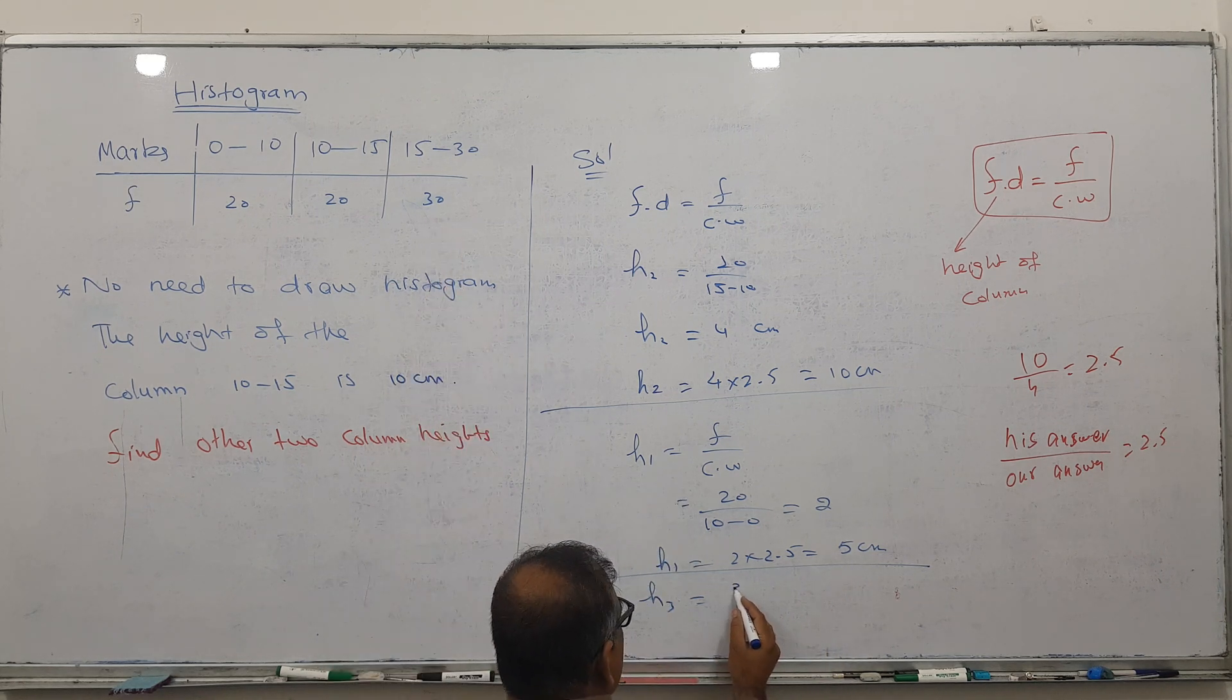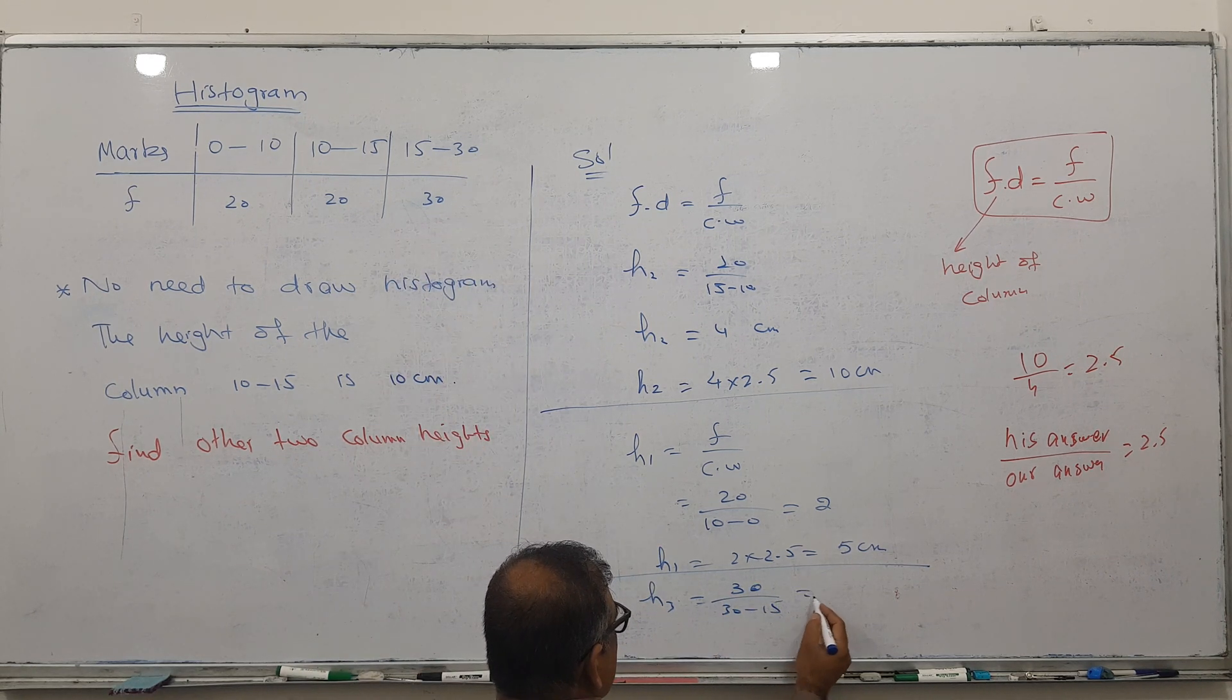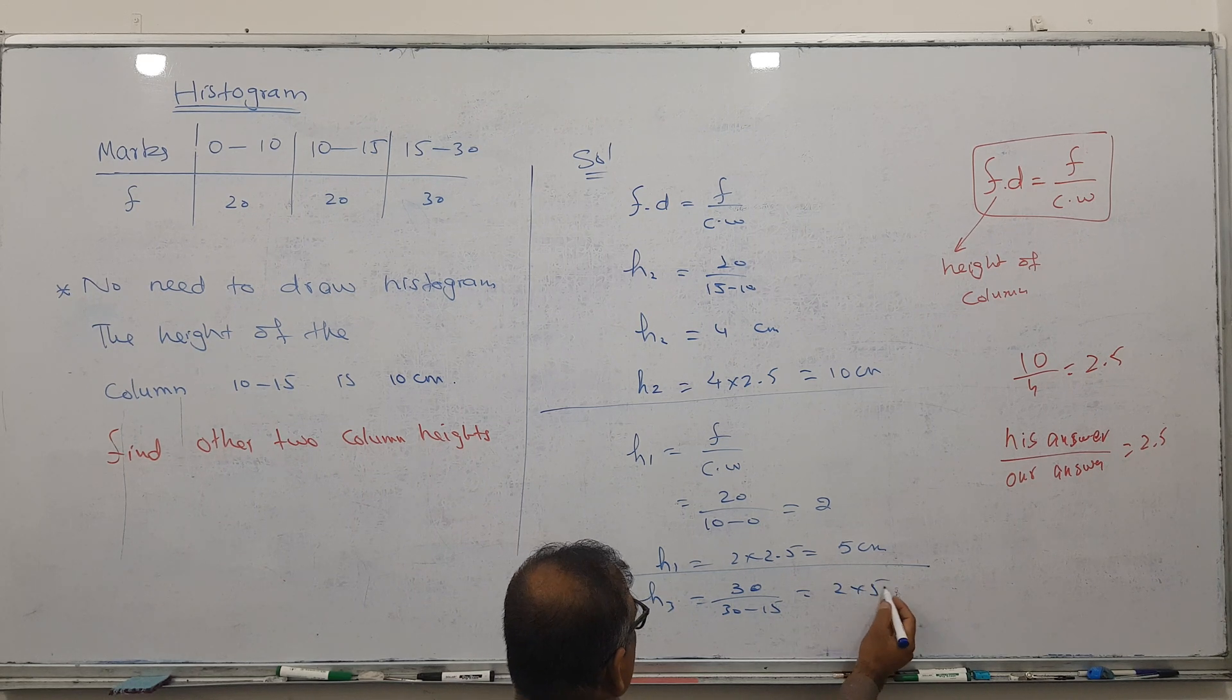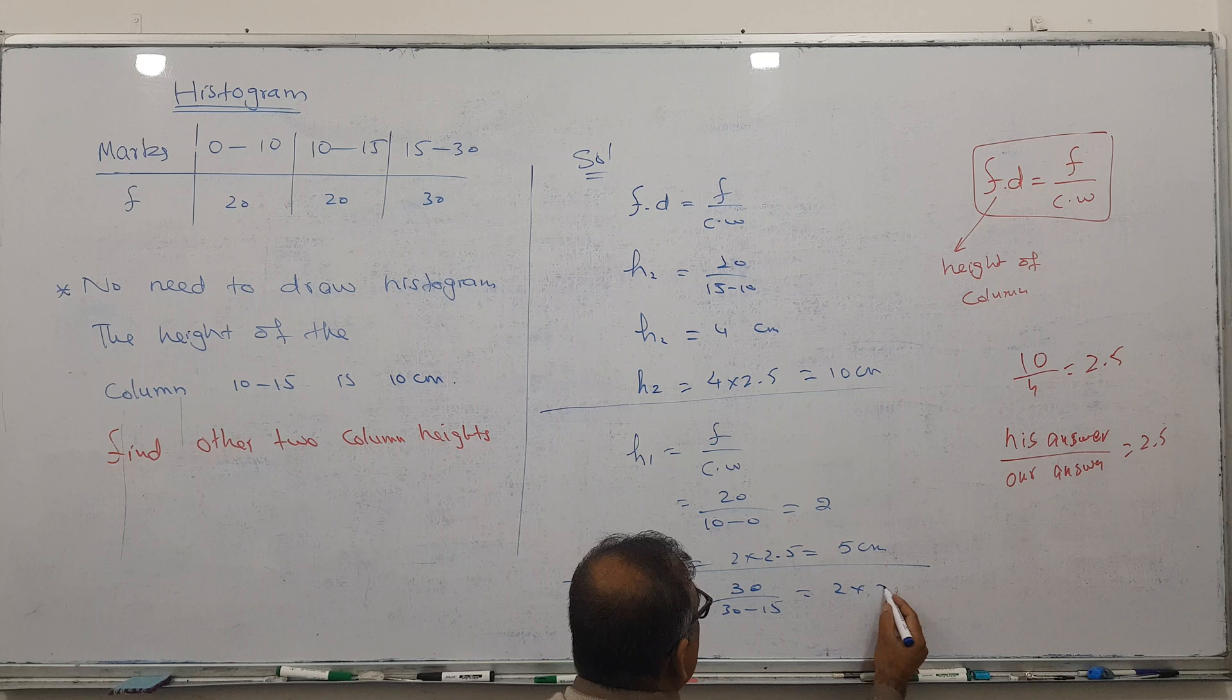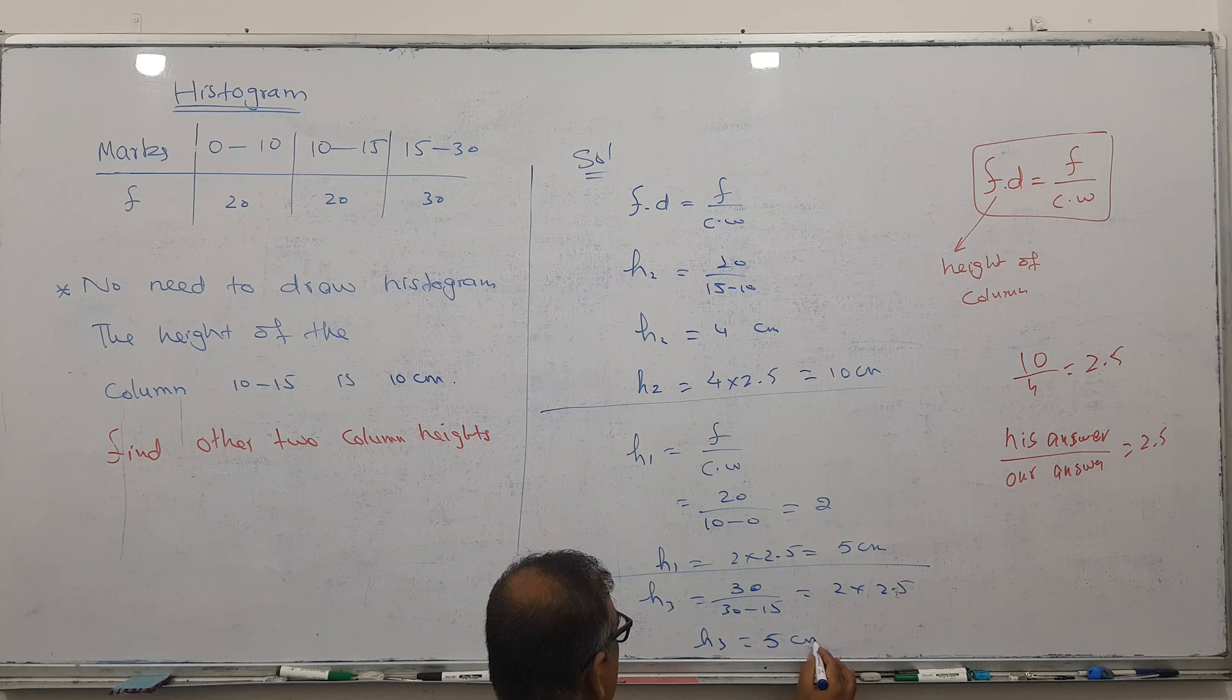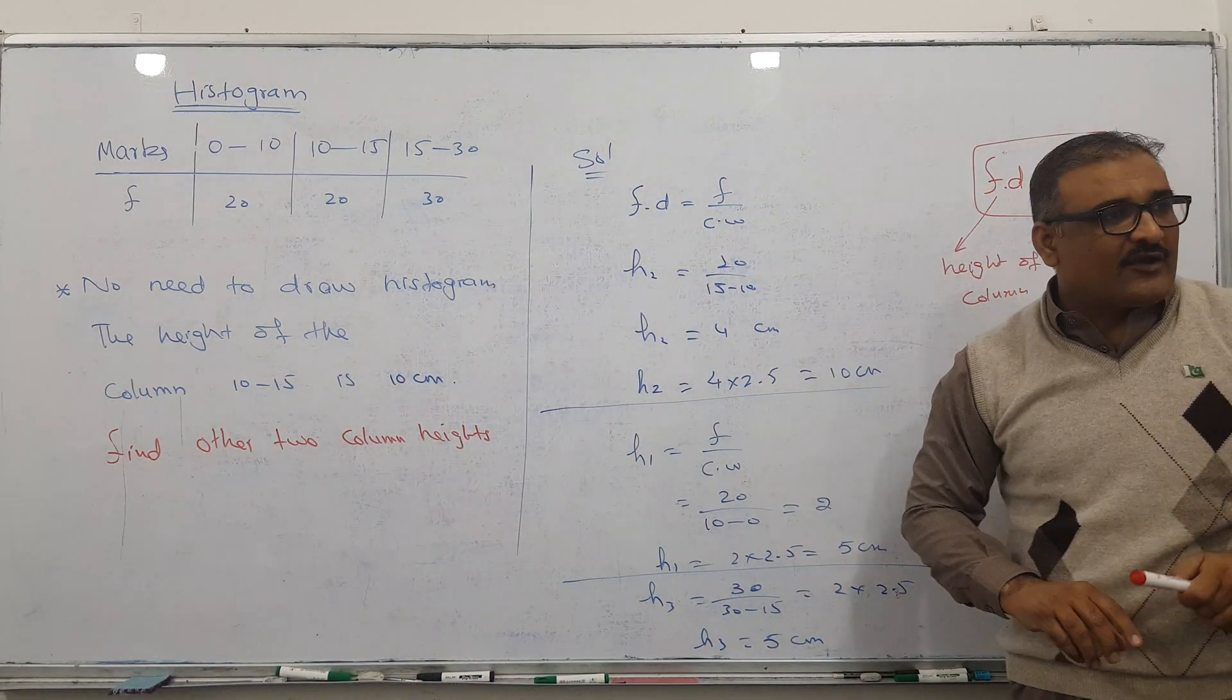Let's find height 3. I'm putting the formula directly now: frequency divided by class width. Frequency is 30, class width is 30 minus 15, so the answer is 2. And again, this times 2.5 gives my height of the third column as 5 centimeters.